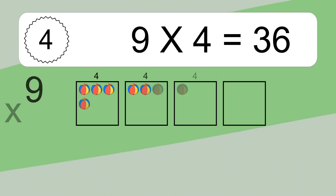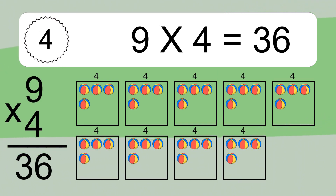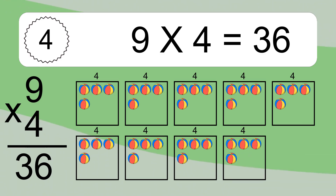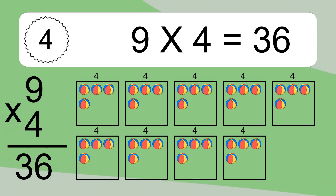9 times 4 equals 36. We have 9 boxes, and each box has 4 colorful balls inside. If you count all the balls in all the boxes together, you will have 9 times 4 balls. This equals 36 balls.